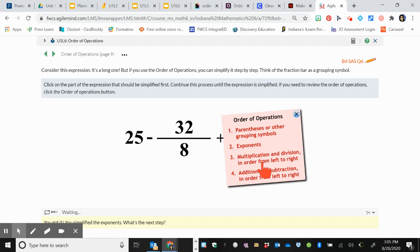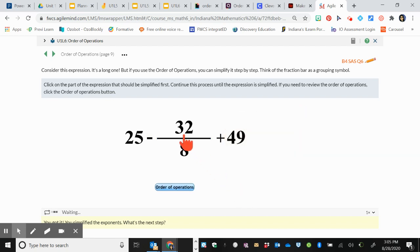Now I can go on to multiplication and division. 32 divided by 8 equals 4.